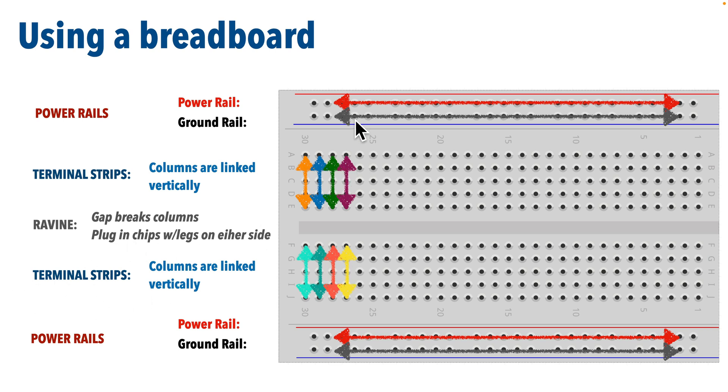Each of the two horizontal rows at the top and the bottom are also connected, but horizontally. These are called the rails or sometimes the power rails. Because these horizontal rails are connected, you can use them to share ground and power. Only make a single connection from each rail to a power or ground pin.